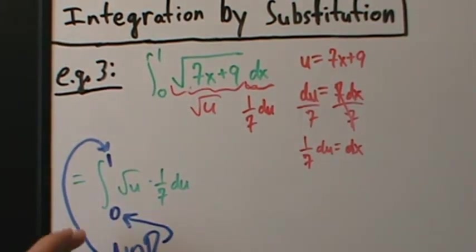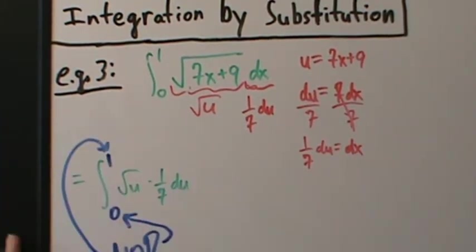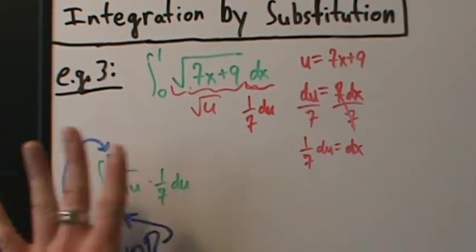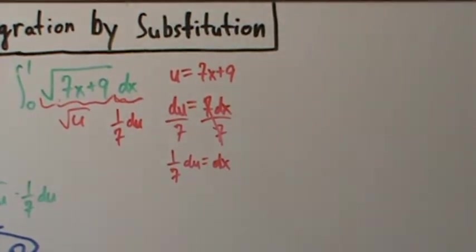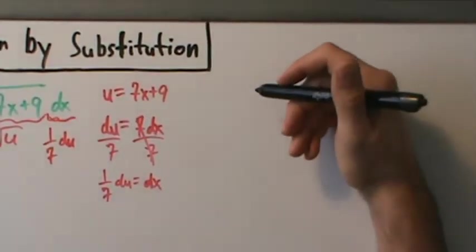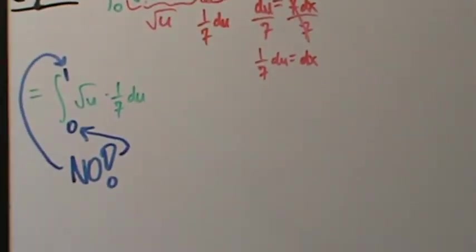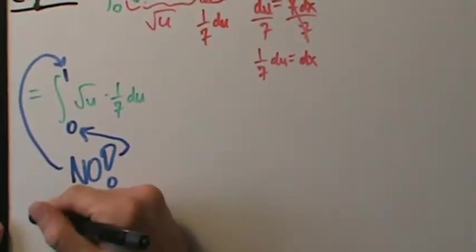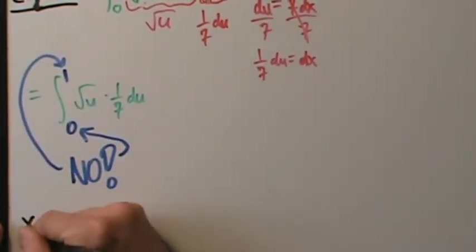So what do we do? Let's set up a little x-u chart. We want to find the corresponding u values when x goes from 0 to 1.